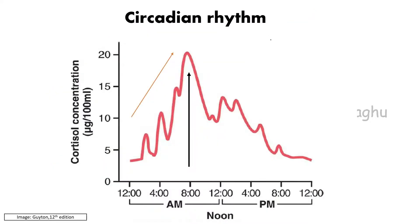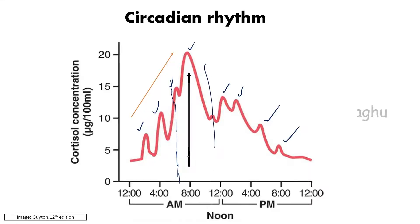Now, what is the meaning of circadian rhythm? Like many other activities of the body, cortisol also follows the circadian rhythm, meaning the secretion of cortisol is not uniform throughout the 24-hour day — there are a lot of fluctuations. Looking at a graph, we can see many bursts of cortisol secretion throughout the day. The maximum secretion of cortisol occurs somewhere between 5 o'clock to 9 o'clock in the early morning.